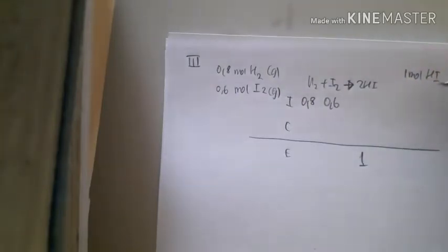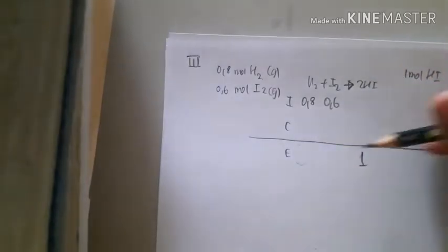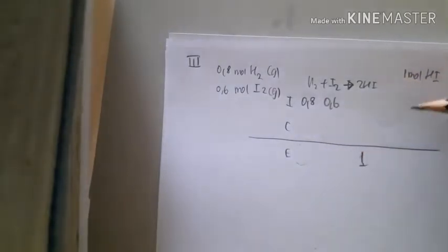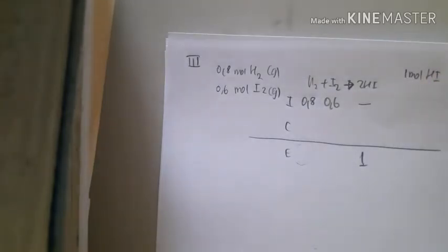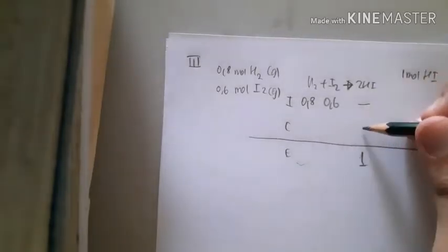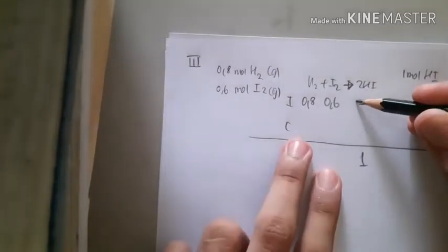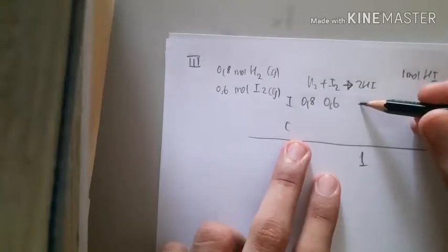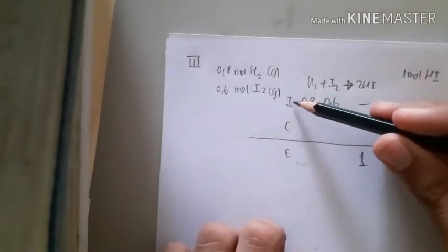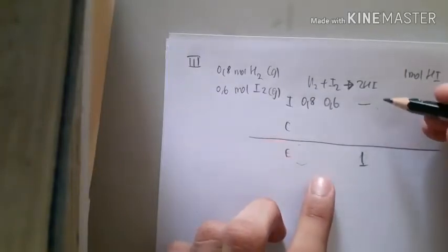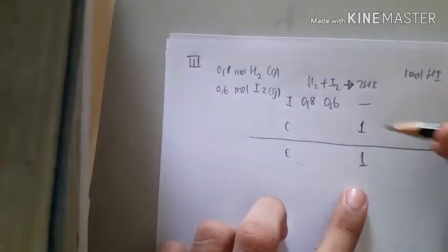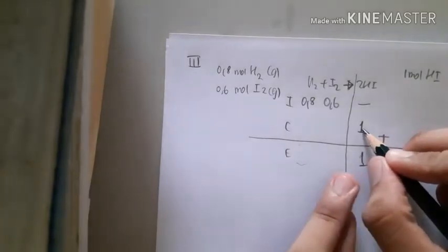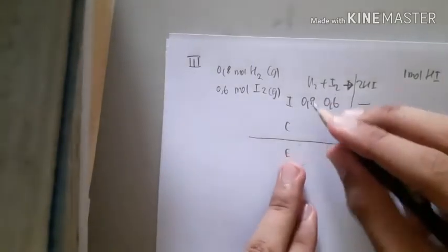In the initial state, there are no moles of hydrogen iodide. When the reaction occurs, the product hydrogen iodide has no moles initially, but in the change state it gains moles so that hydrogen iodide can have 1 mole. This change is +1 for the product.